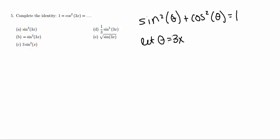And now I'm going to go ahead and just rewrite this first line. So now I have sine squared of 3x plus cosine squared of 3x is equal to 1.